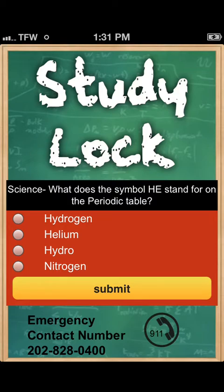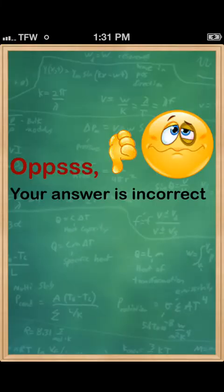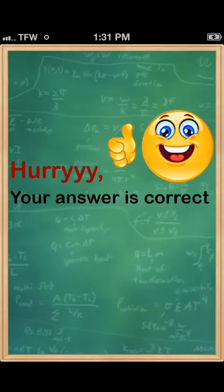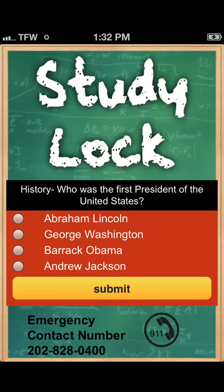Correct answers are given a thumbs up. Incorrect answers ask the child to try again. You will notice on the bottom of the phone that the emergency contact number is there for the child to use in case of an emergency. And 911 is also integrated into the application for serious emergencies.